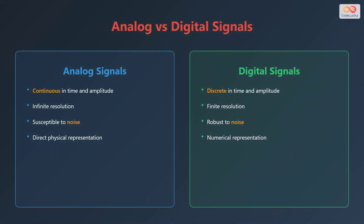Let's compare analog and digital signals. Analog signals are continuous in both time and amplitude, offering infinite resolution but are susceptible to noise. They provide a direct physical representation of data. On the other hand, digital signals are discrete in time and amplitude, providing finite resolution. They are more robust to noise and use a numerical representation.